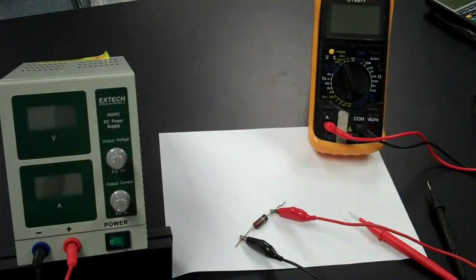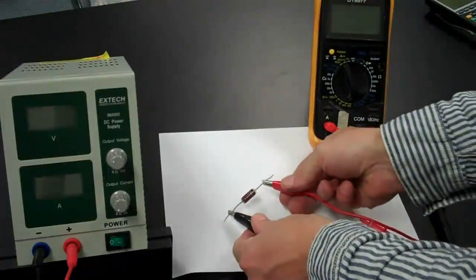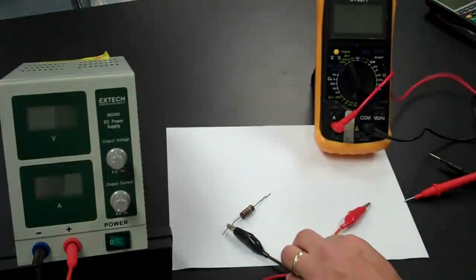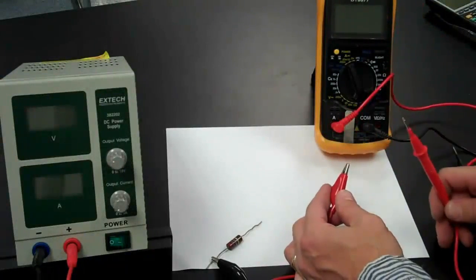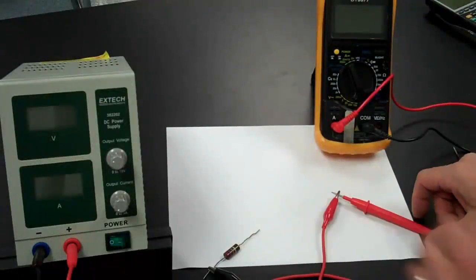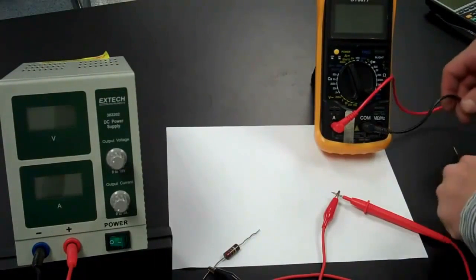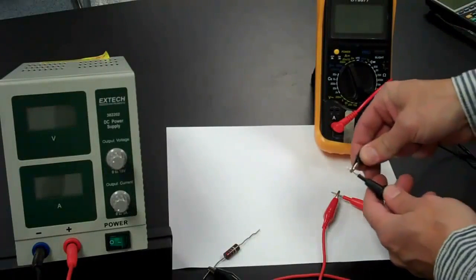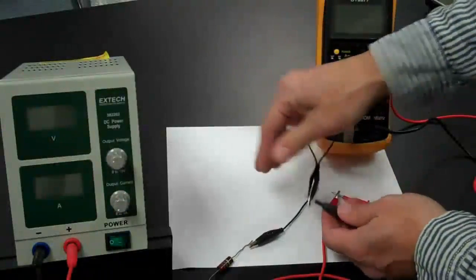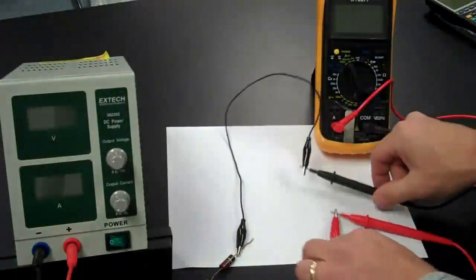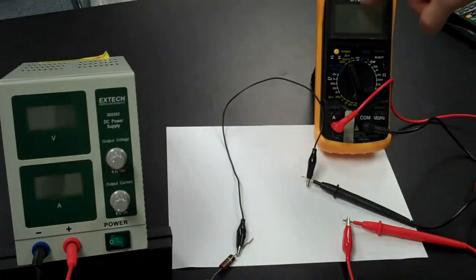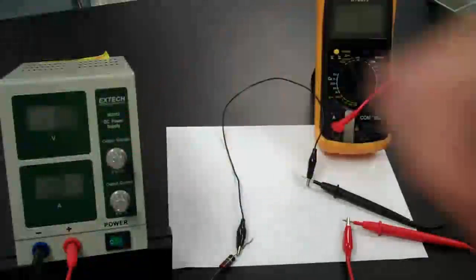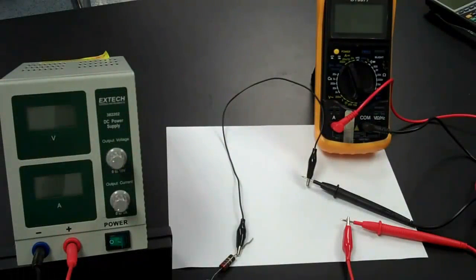However, if I'm going to measure the current, I have to measure it in series. So that means I have to disconnect my circuit and I have to add the meter in series. So I'll connect one side of the meter to the positive terminal of the power supply. And the other side of the meter, I will connect to the other side of the resistor. So that now the current leaves my power supply, travels through my meter, out the other side of the meter, into the resistor, and back to my power supply, completing my loop and completing the circuit.